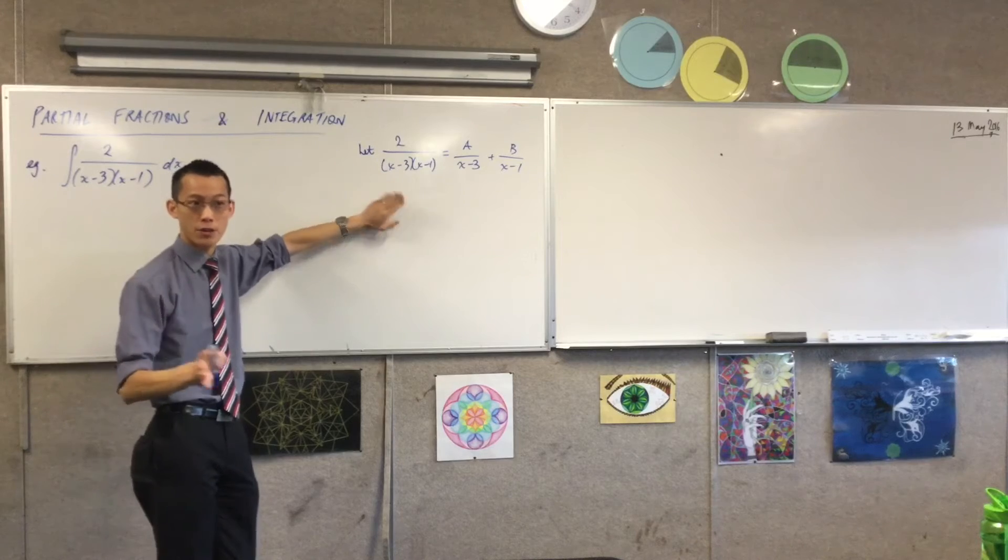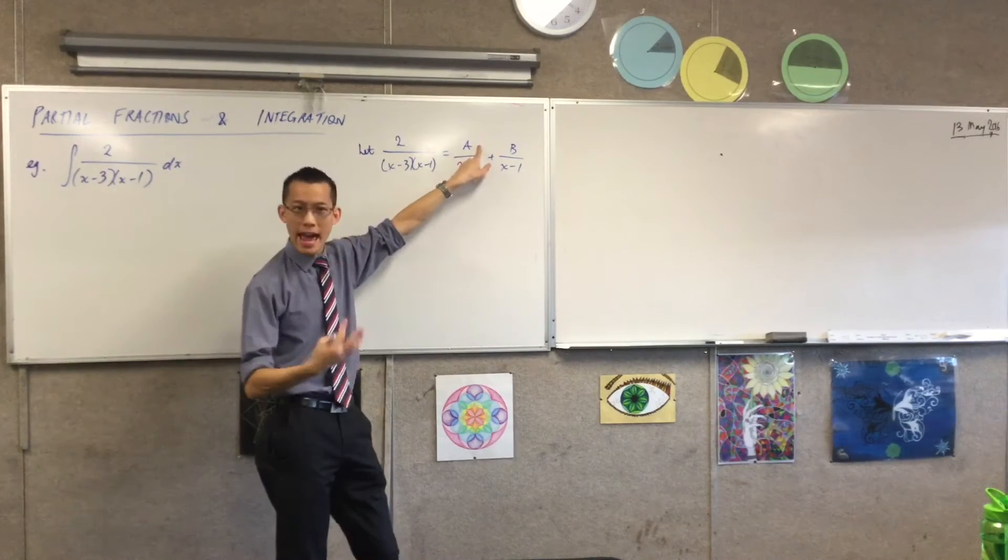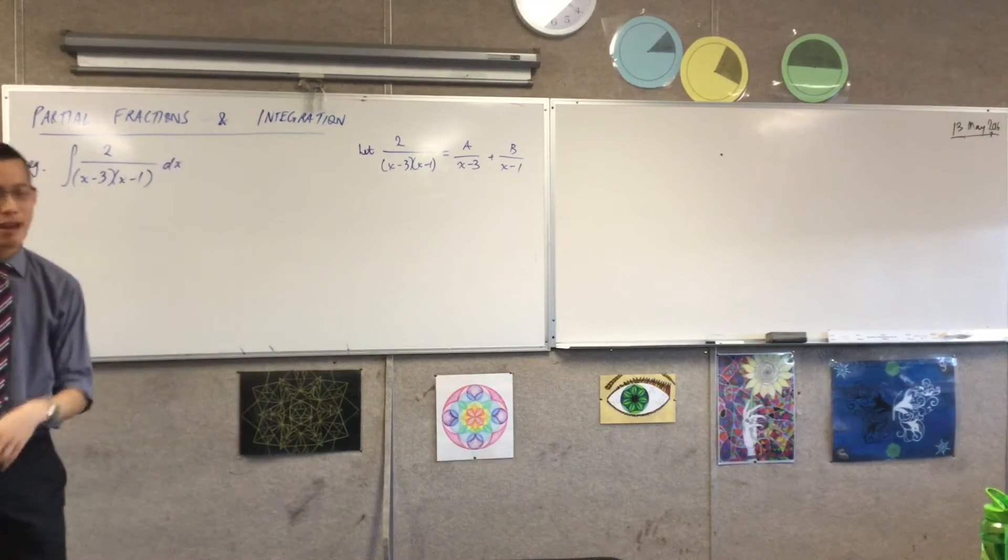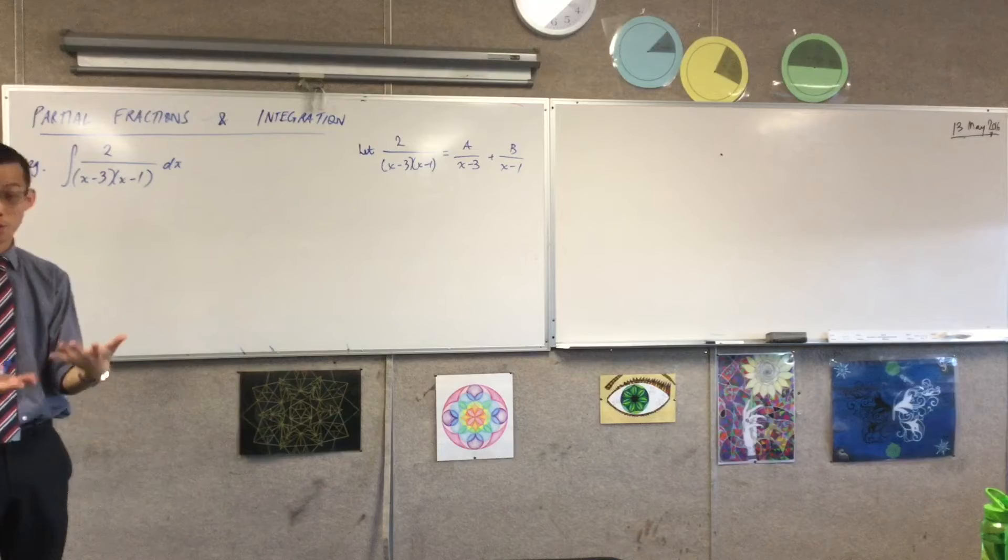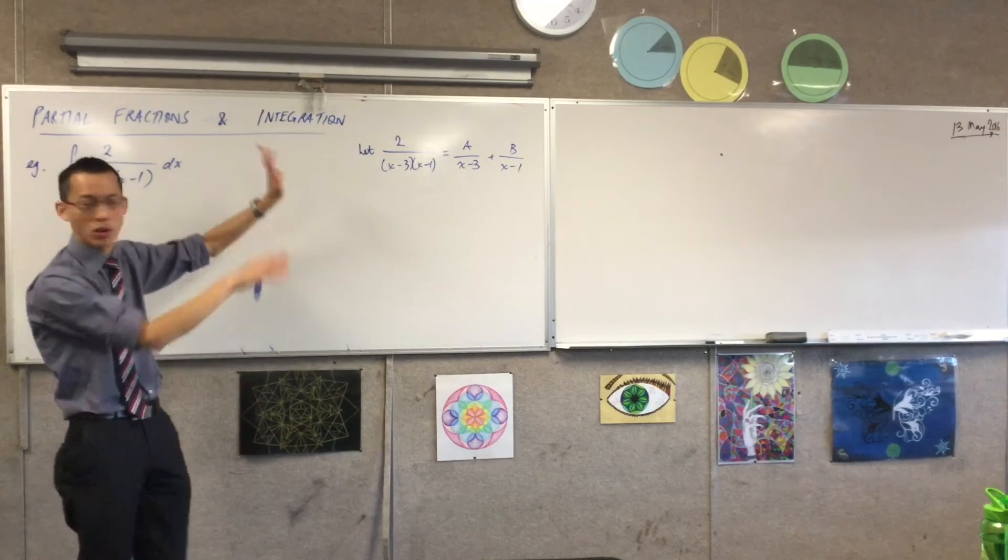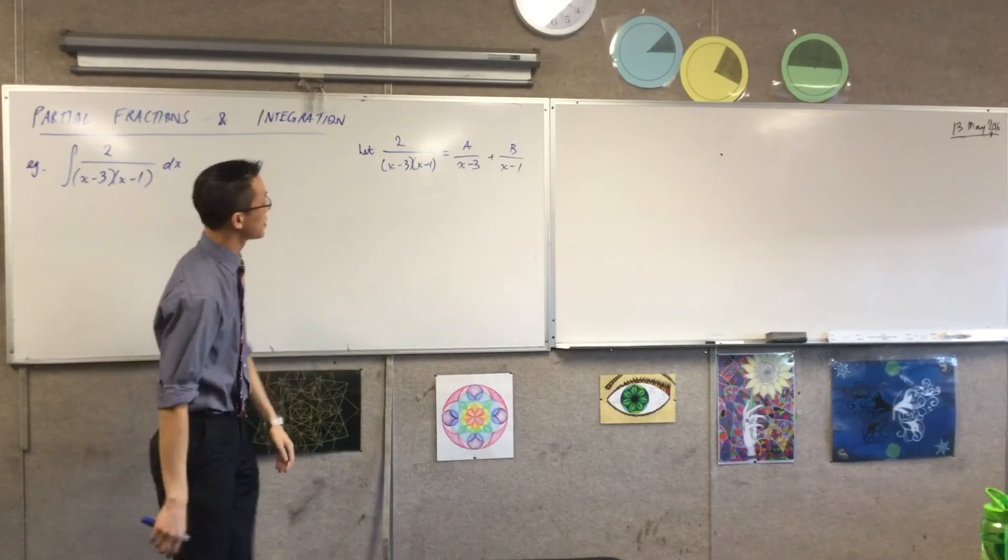If it was x squared plus 3, what I want up here, the A and the B, they really stand for the remainder after you've divided through. And of course, a quadratic divisor will have a linear remainder. But in this case, two linear divisors, therefore two constant denominators.